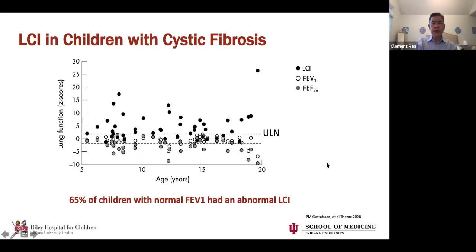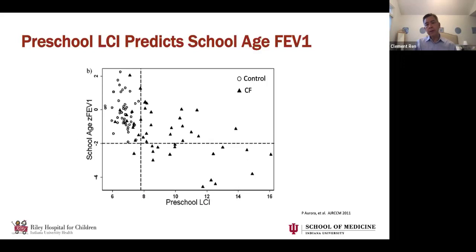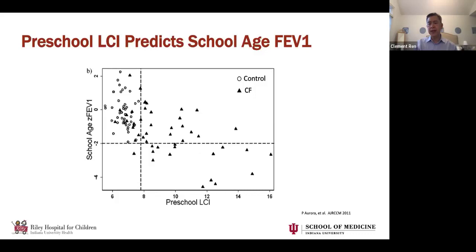There've been several other studies around the same time showing this. More importantly, as shown in a study by Paul Aurora, preschool LCI tracks with future FEV1. They measured LCI around preschool age — three to five years old — then measured FEV1 at six to 12 years of age, with a control group. Children with an abnormal LCI either continued to be abnormal and also tracked with kids who subsequently had abnormal FEV1, showing that LCI has physiologic relevance and does relate to FEV1.